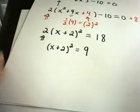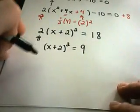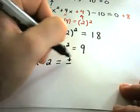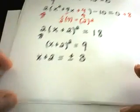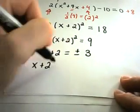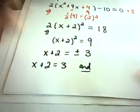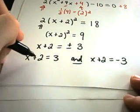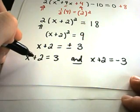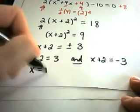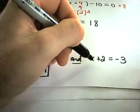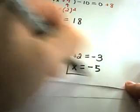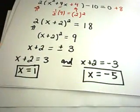Taking the square root of both sides: the left gives x + 2, and the right gives plus or minus 3, remembering to include the plus or minus. This gives two equations: x + 2 = 3 and x + 2 = -3. Subtracting 2 from both sides of the first gives x = 1, and from the second gives x = -3 - 2, or x = -5. Those are our two solutions to this quadratic equation.